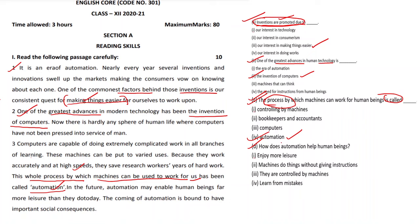Now let us check question four: 'How does automation help human beings?' The passage states: 'In the future, automation may enable human beings far more leisure than they do today.' So it makes human beings enjoy more leisure than they do now — 'Enjoy more leisure' is the answer.